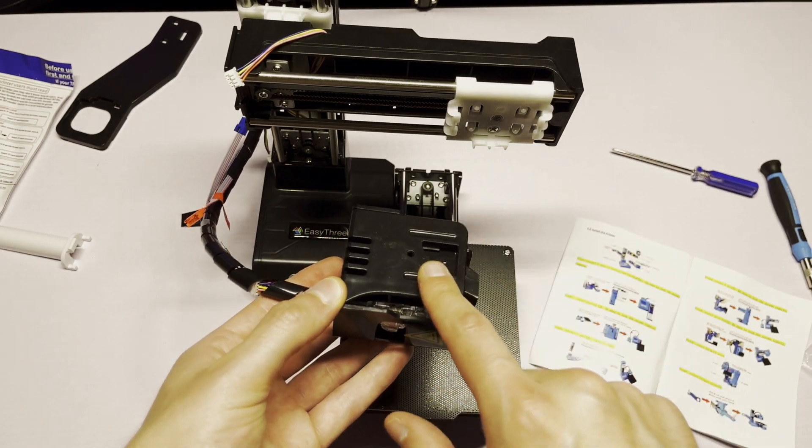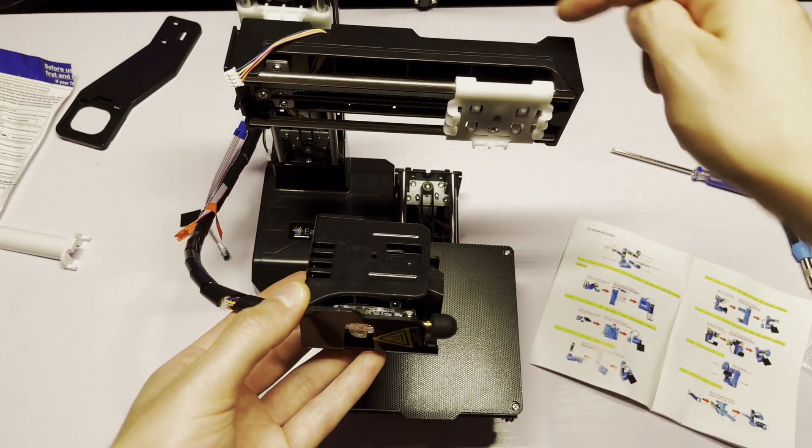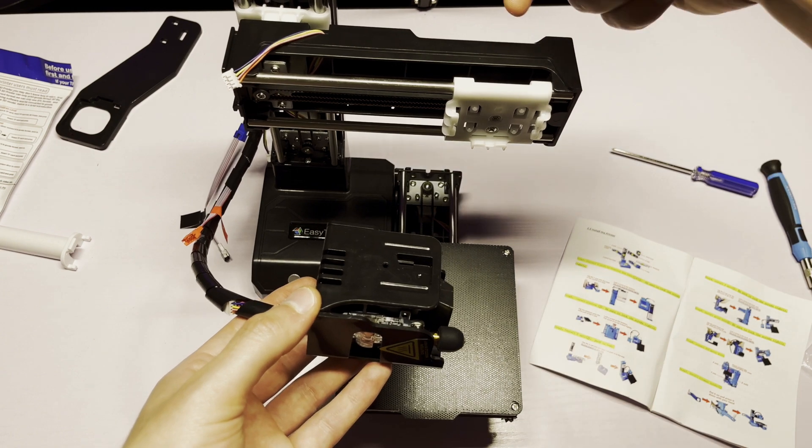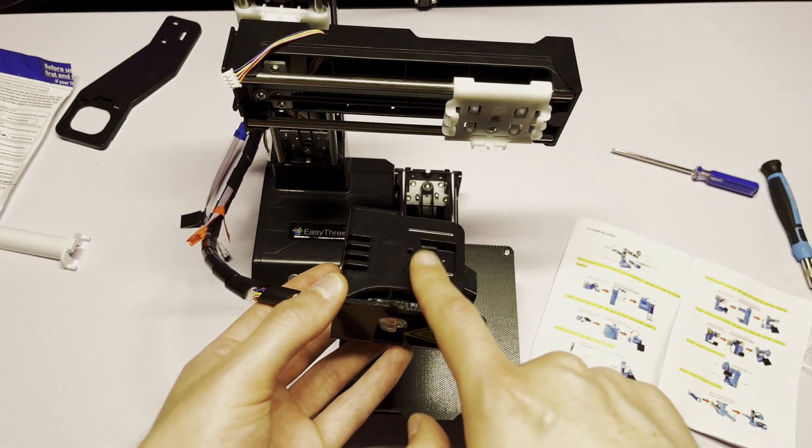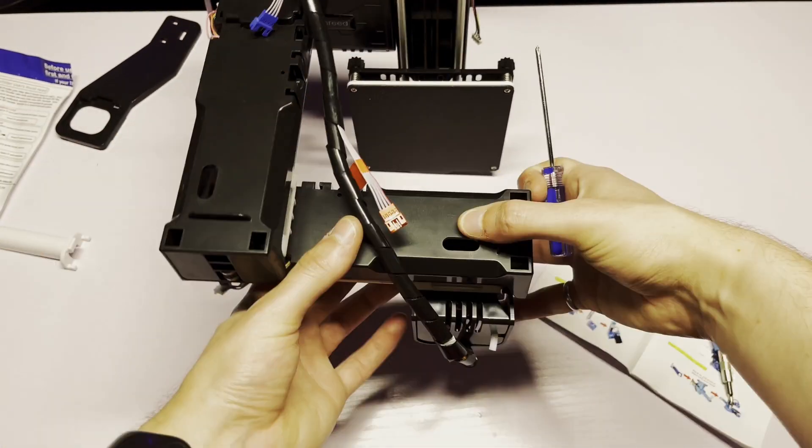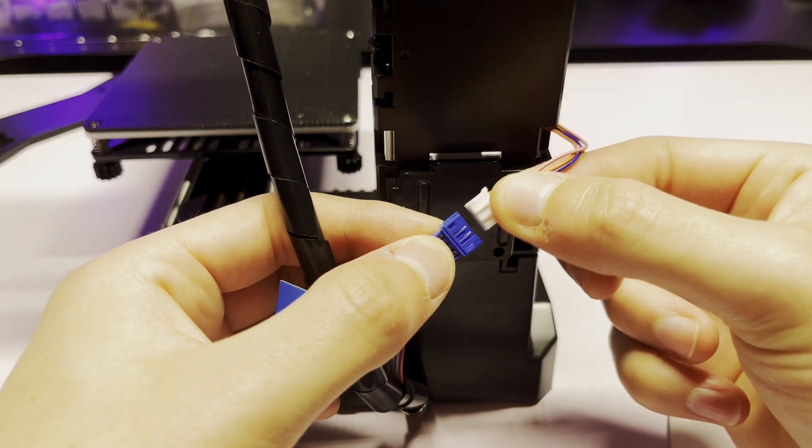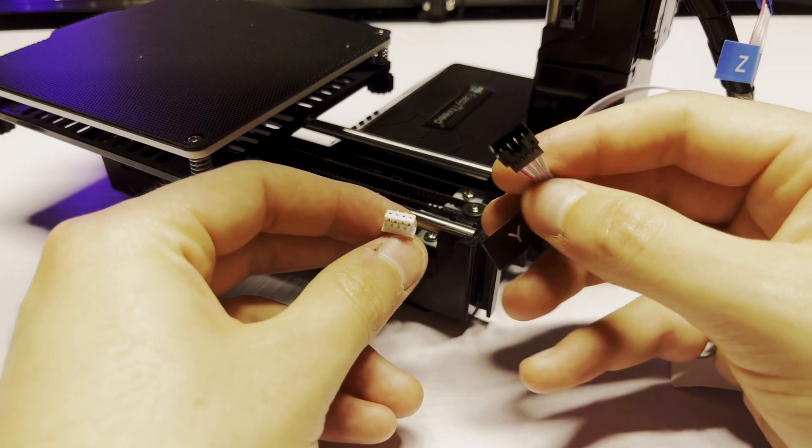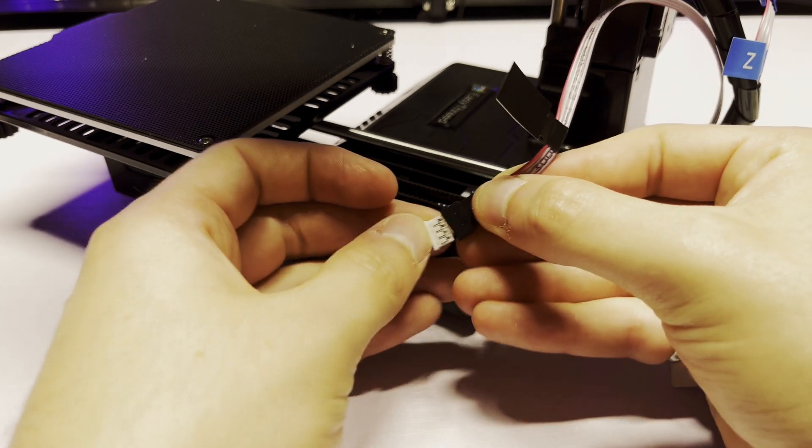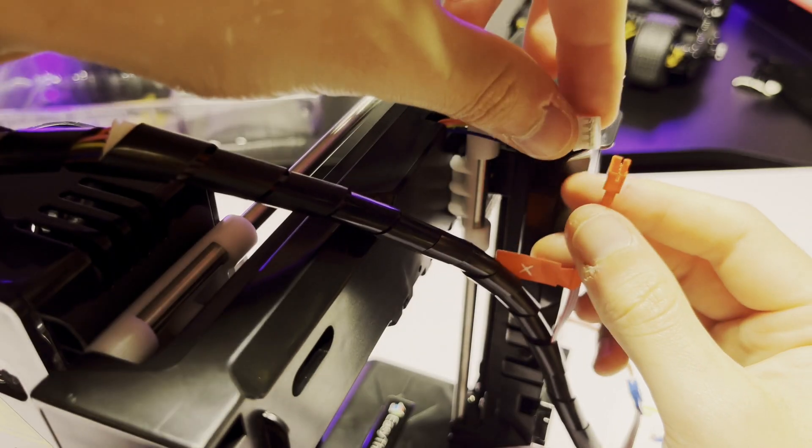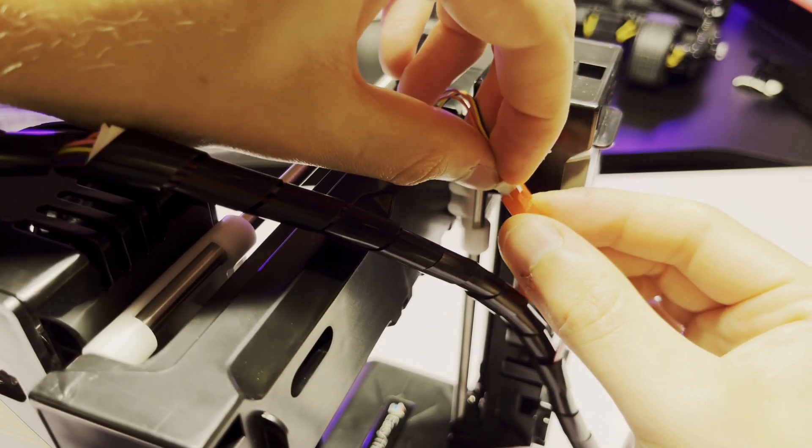The next step is to take the printer head and slide it onto the X axis. There will also be a screw that goes to the back to keep the extruder in place. Now that that's done, I can connect the X, Y, and Z stepper motor wires. Each of them is labeled, so it's really easy to know where which one goes. It would be pretty hard to screw that up.